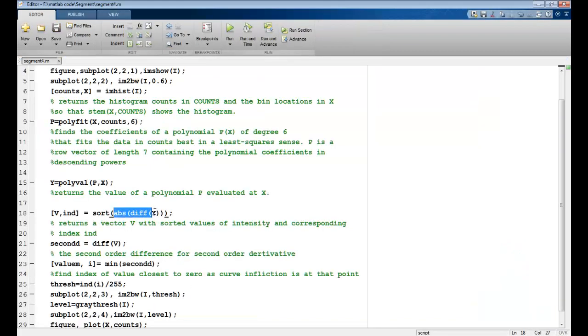I take the absolute value because I am looking at the modulus value of the difference, not the sign of it. And then I sort them. So once these are sorted, I return these values in these vectors.